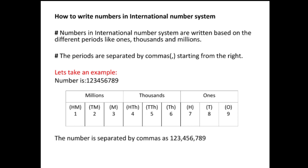Let's take an example: the number 1 2 3 4 5 6 7 8 9. I have already made a place value chart and placed the digits in it. Always start from the right — in the ones period, the rightmost place value is ones, so nine goes at ones, eight at tens, seven at hundreds. Then six at thousands, five at ten thousands, four at hundred thousands, three at millions, and so on. Commas are placed after every three digits from the right.